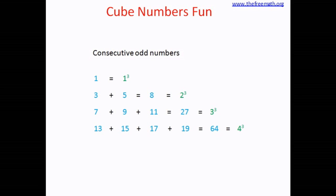So what do you see here? You see here a very interesting pattern. If you add these consecutive odd numbers then you get a cube number.